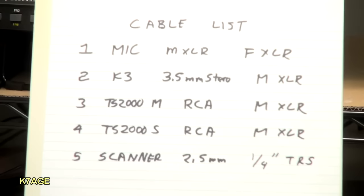The TS-2000, the main output is an RCA on my audio breakout box. It'll go to another male XLR to plug into the mixer. Same thing for the sub-receiver output, another RCA to male XLR. And the scanner uses a 2.5mm and I'll connect that to a quarter-inch connector on the mixer which has three circuits: tip, ring, and sleeve.